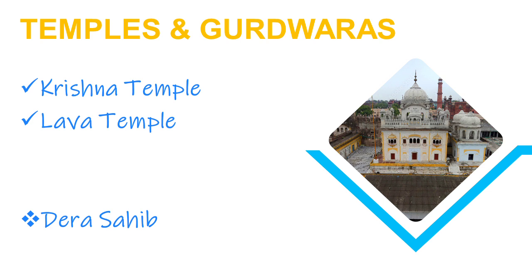As Lahore was also ruled by many Sikh and Hindu rajas, there are many temples and gurudwaras in the city. Temples include Krishna Temple and Lava Temple. The famous gurudwara is Dera Sahab Gurudwara in Lahore.